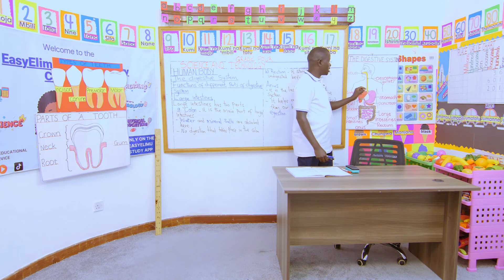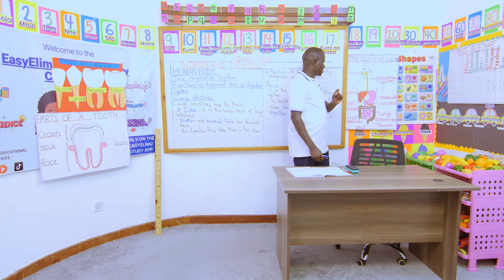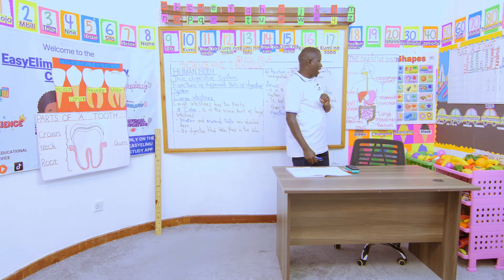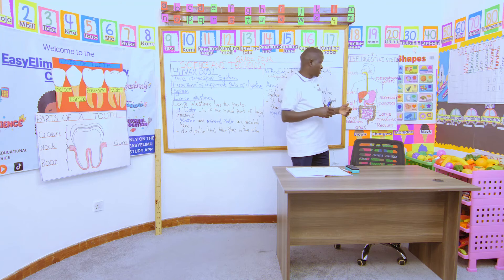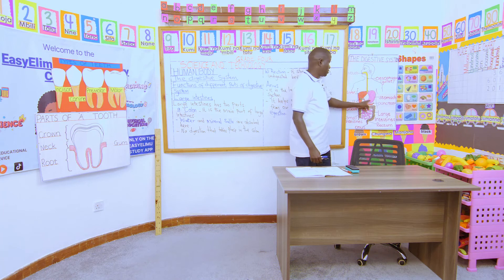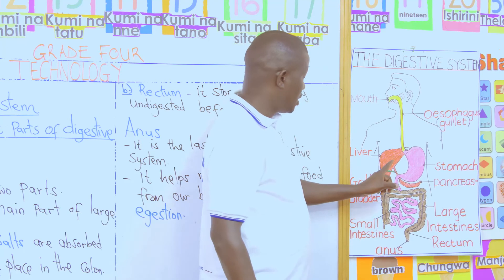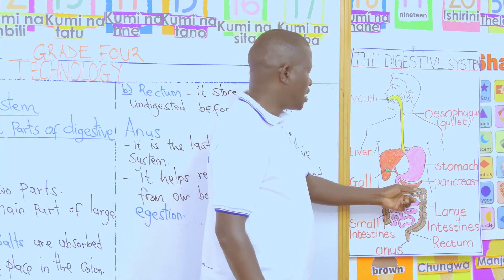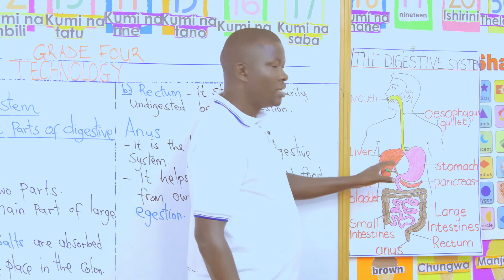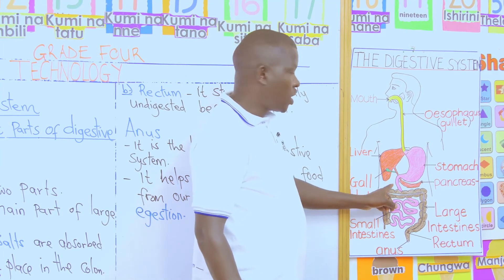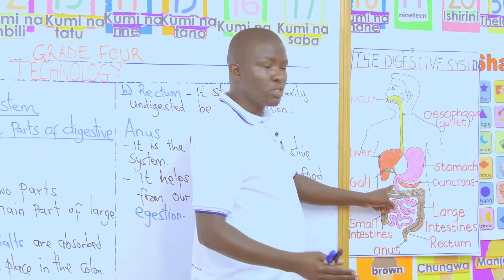The gastric juice then digests proteins. After the stomach — where the food stays for two to three to four hours — the food mixes with the juices in the stomach and looks like porridge. We say this mixture or solution is called chyme. It then goes down the upper part of the small intestines, which we call the duodenum, mixing with the bile juice from the gallbladder produced by the liver, and pancreatic juice from the pancreas. This breaks fats and oils into small, absorbable particles.